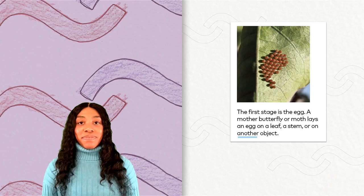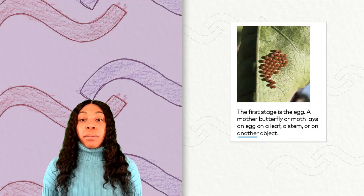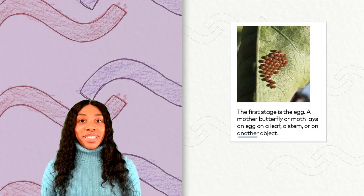The first stage is the egg. A mother butterfly or moth lays an egg on a leaf, a stem, or on another object. We have one high frequency word: another.